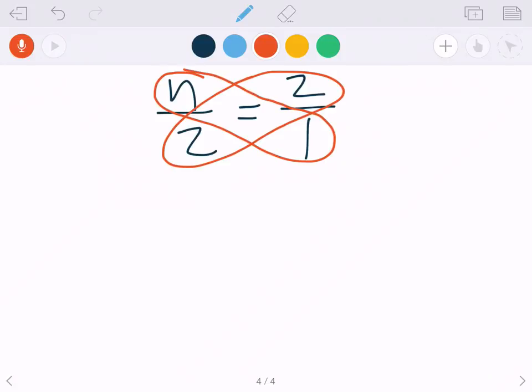So whenever we're solving proportions, we are going to cross-multiply. So that's what these butterfly wings are trying to show you. We're going to do n times 1, which is just 1n, or just n. And we have 2 times 2, so we're going to drop down the equal sign. 2 times 2 is 4. So now we have a nice little one-step equation. You can actually leave it how it is, or if you want to divide both sides by 1, your answer is going to be n equals 4.